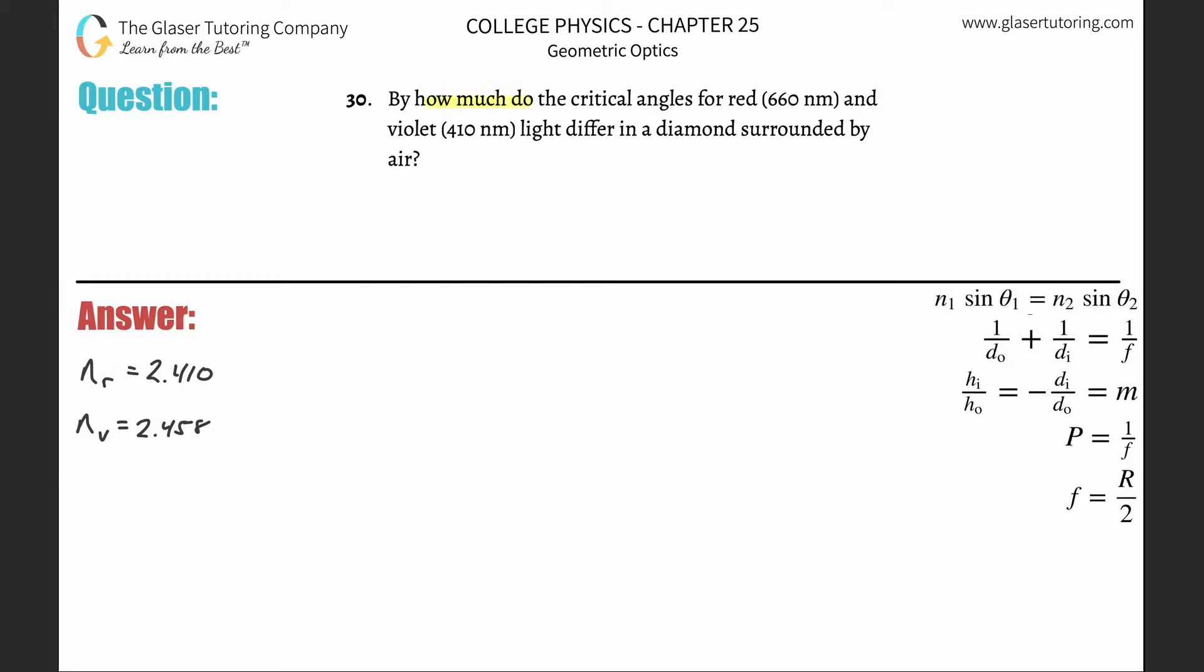Problem 30: By how much do the critical angles for red and violet light differ in a diamond surrounded by air? Please review problem 20 for a discussion on critical angles.